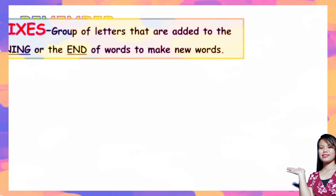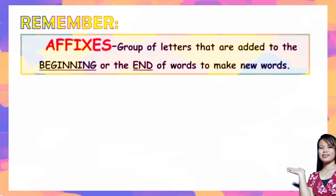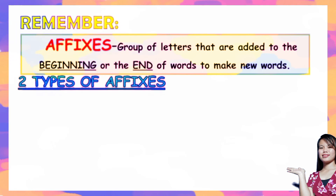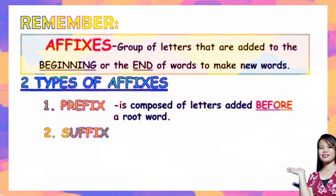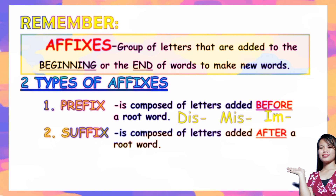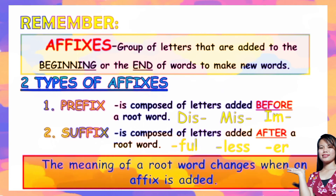Let us remember: affixes are the group of letters that are added to the beginning or at the end of words to make new words. There are two types of affixes: the prefix and the suffix. A prefix is composed of letters added before a root word, like Miss, Dis, and Im. A suffix is composed of letters added after a root word, like 'ful,' 'less,' and 'er.' The meaning of a root word changes when an affix is added.